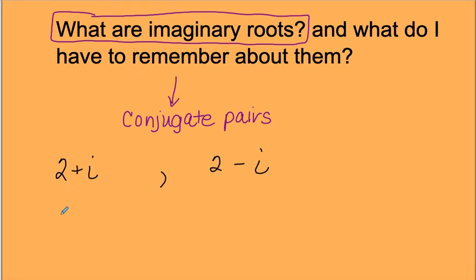So if I told you that 3 plus 5i is a root, then we know that 3 minus 5i is a root. Same with a rational root. If I gave you 1 plus root 2 is a root, then 1 minus root 2 would also have to be a root of that polynomial.